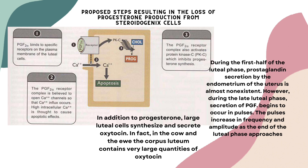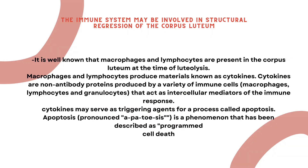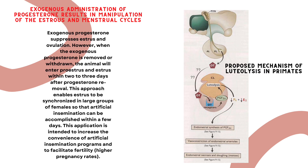Here are the proposed steps resulting in the loss of progesterone production from steroidogenic cells. The immune system may be involved in structural regression of the corpus luteum. It is well known that macrophages and lymphocytes are present in the corpus luteum at the time of luteolysis. Macrophages and lymphocytes produce materials known as cytokines. Exogenous administration of progesterone results in manipulation of the estrous and menstrual cycles. Here is the proposed mechanism of luteolysis in primates.